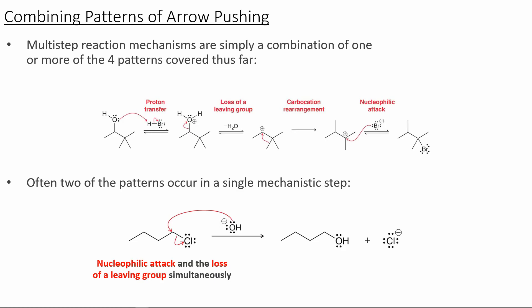In a multi-step reaction, we can combine all four of these patterns. Starting with an alcohol, the alcohol undergoes a proton transfer — an acid-base reaction — to form a protonated oxygen. This is now a good leaving group because water is a very stable molecule, so we break the carbon-oxygen bond with a heterolytic bond cleavage, those electrons go to oxygen forming water, and now we have a secondary carbocation. Analyzing the secondary carbocation, we notice a quaternary carbon next door, so we have a 1,2-methide shift to form a more stable tertiary carbocation. This tertiary carbocation is finally trapped with a nucleophilic bromine to form a new carbon-bromine bond in the product.